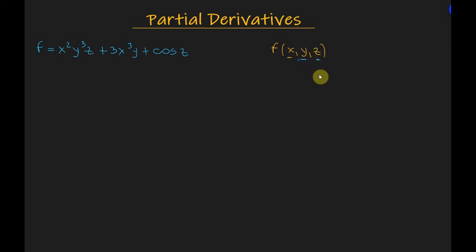The partial derivative is denoted by the curved symbol ∂, which replaces the letter d that was used to denote the full derivative.